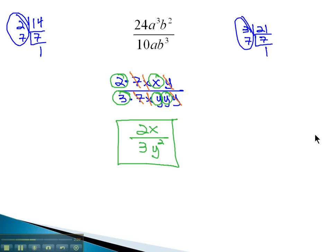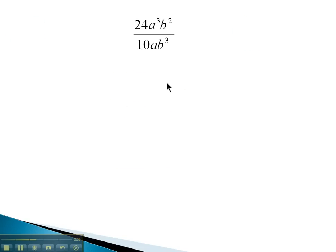Let's try another one. Here we have 24a cubed b squared over 10ab cubed. With the numbers, let's use the other method this time, where we simply look at 24 and 10 and identify what the common factors are without having to go through the work of prime factorizations.